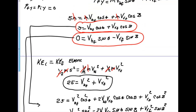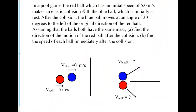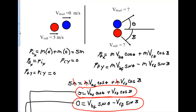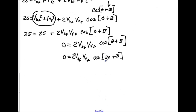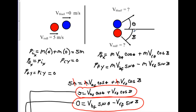We were given that the blue ball moves at 30 degrees, so theta equals 30 degrees. Substituting: 0 equals 2 times v_blue_final times v_red_final times cosine(30 plus beta). We know that cosine of 90 degrees equals zero, so this proves that beta must equal 60 degrees. According to the diagram, if the blue ball goes off at 30 degrees and the red ball goes off at 60 degrees, the angle between them is 90 degrees.